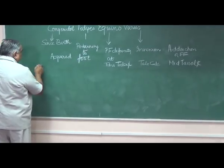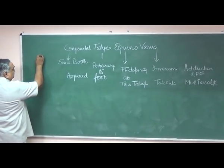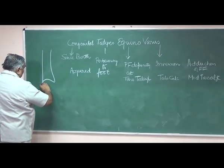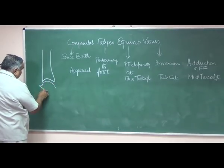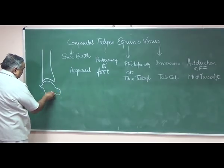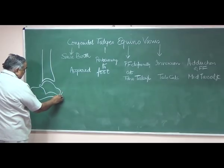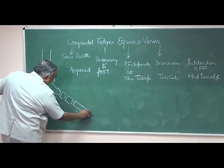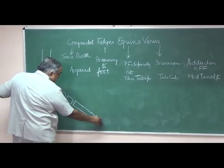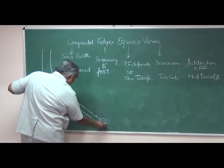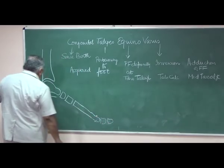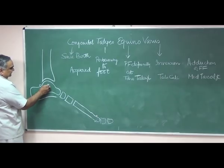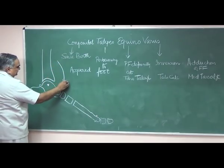If we draw this joint, this is the fibula, this is the talus, here is the calcaneum, here is the navicular, the cuneiform, the metatarsals and the fibula. The equinus deformity means that on this ball of the talus, there is plantar flexion.